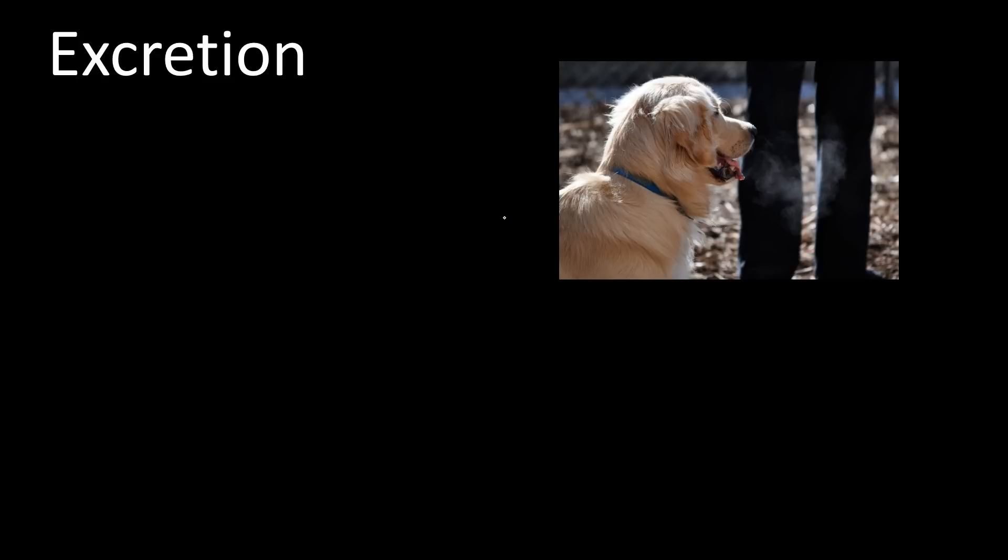Now that we've made some energy, we also made some waste products. Getting rid of waste is called excretion. So why do I have a picture of a dog? Well, this dog is actually excreting. As it exhales, it is removing carbon dioxide, which is a waste product of cellular respiration. It's also, as you can see, removing some water vapor, which is another waste product. Excretion is all about removing waste. You may typically think of excretion as producing urine, but that's not the only way to remove waste. You also remove waste by exhaling or by sweating. So excretion is lots of different ways that we remove waste.